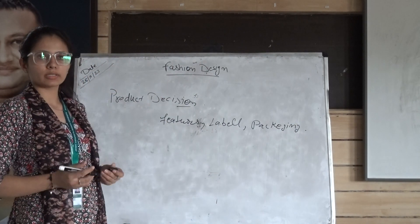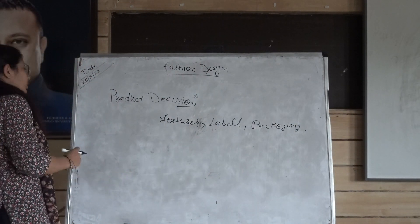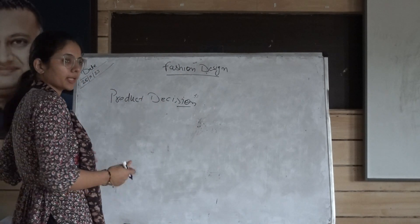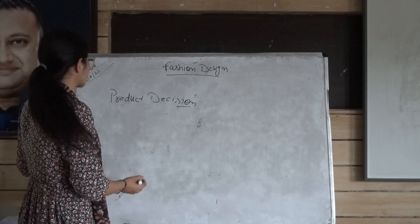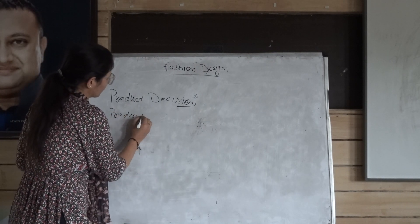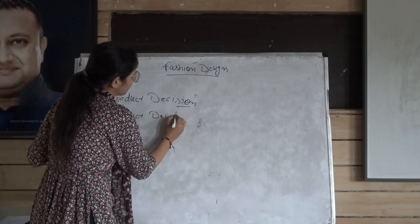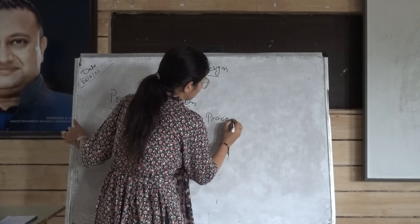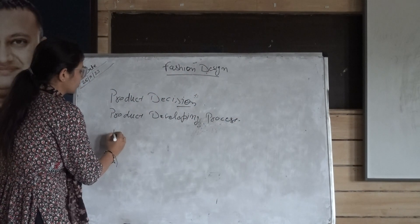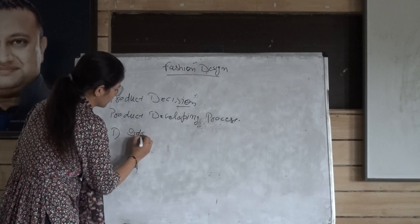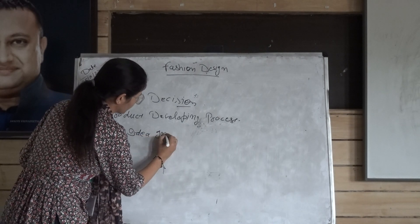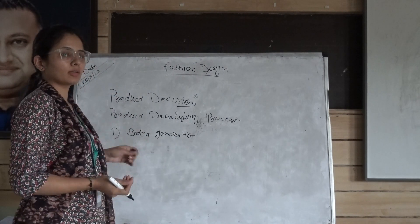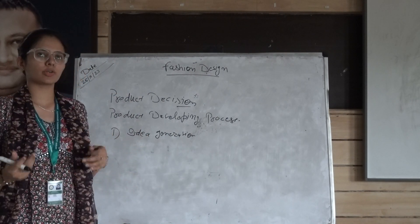This is the definition of Product Decision. Now next we will learn about Process of Product Development. It is a very basic process and every product goes through this process. There are several steps in Product Development Process. The first one is Idea Generation, in which we generate an idea about which kind of product we are going to make.